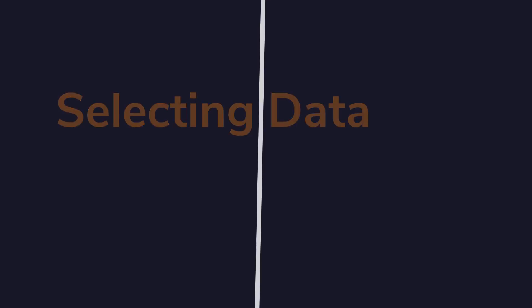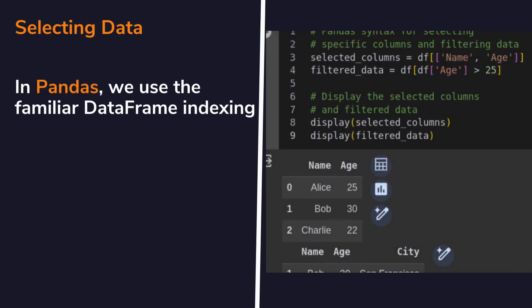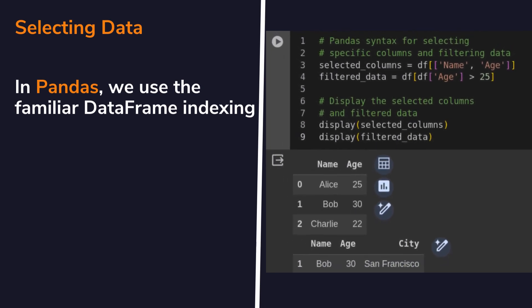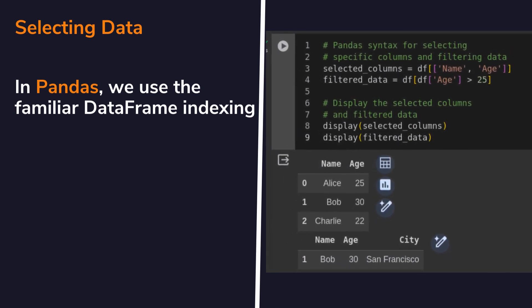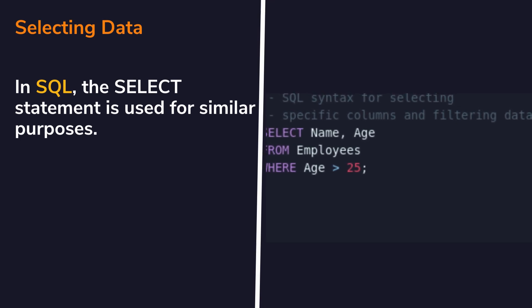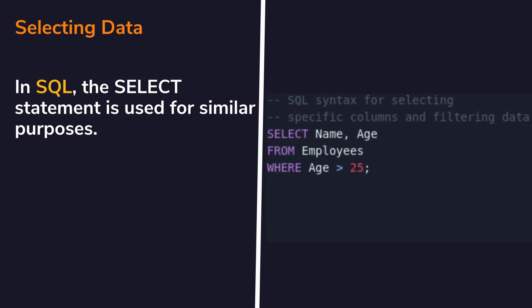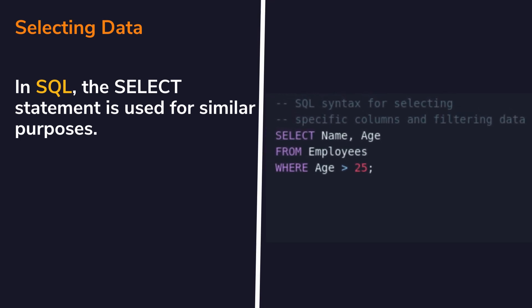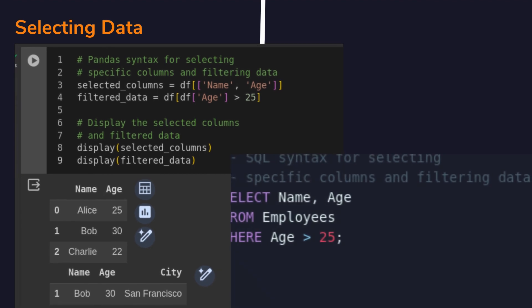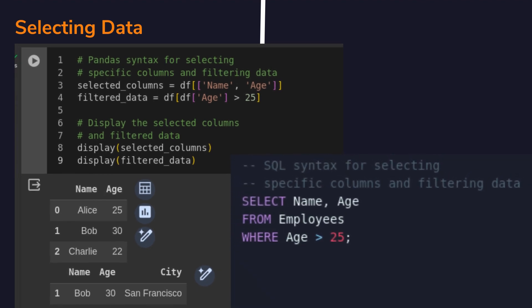Let's dive into the details. In pandas, we utilize DataFrame methods to select columns and filter rows. DataFrame indexing allows for intuitive data selection. Conversely, SQL employs SELECT statements to achieve similar outcomes, offering flexibility in data retrieval from database tables. Here is an example of selecting specific columns and filtering data in both pandas and SQL.